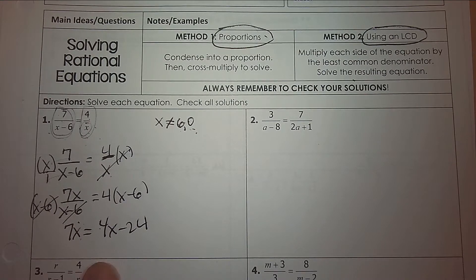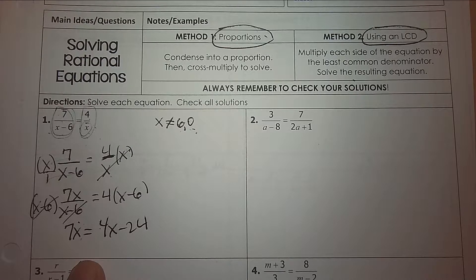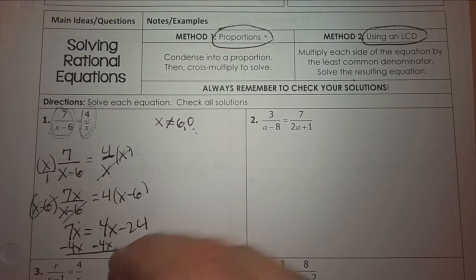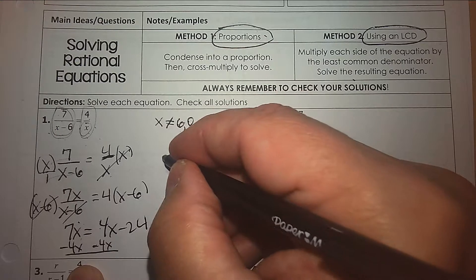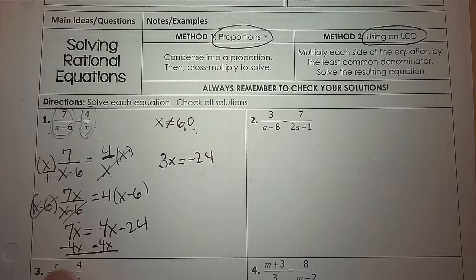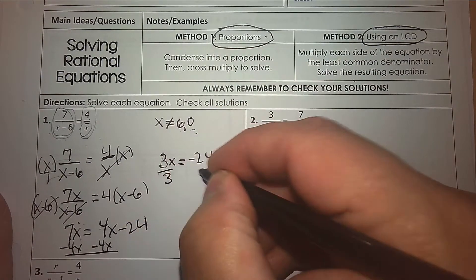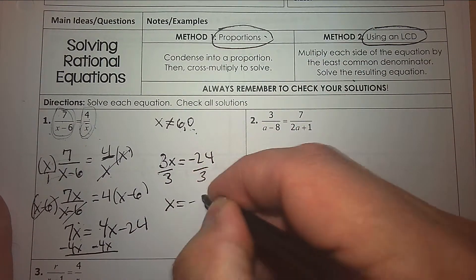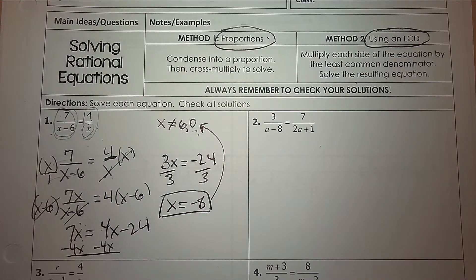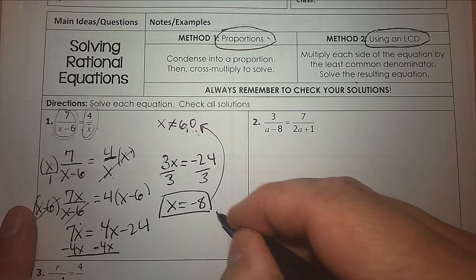What's left is a simple linear equation. To solve a linear, we combine like terms and get x by itself. Subtract 4x from both sides: 7 take away 4 is 3x, we still have negative 24. Divide by 3. So x equals negative 8. Check: is negative 8 one of my excluded solutions? No — so that's a good answer and we're done.